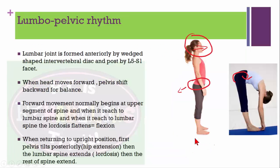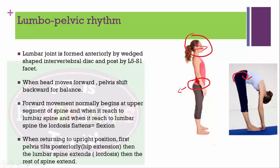The lumbopelvic joint is formed anteriorly by the wedge-shaped intervertebral disc and posteriorly by L5 and S1 facets. When the head moves forward, the pelvis shifts backward for balance. The forward movement begins at the upper segment of the spine; when it reaches the lumbar spine, the lumbar lordosis flattens and goes into flexion. When returning to the upright position, first the pelvis tilts posteriorly with hip extension, then the lumbar spine extends restoring lordosis, and then the rest of the spine extends.